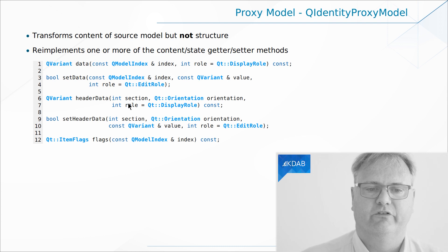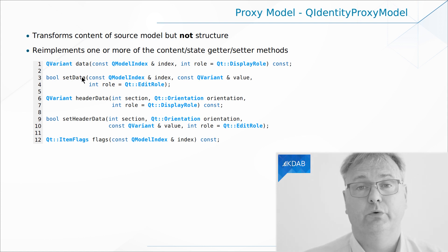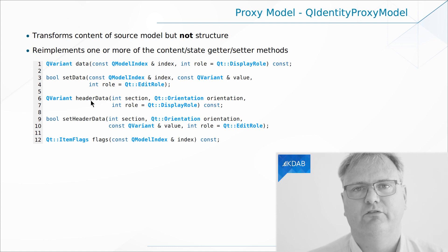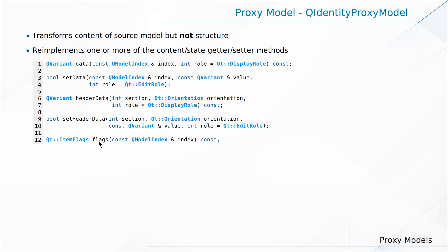The QIdentityProxyModel looks like this — these are the methods you usually would override. You would change data with the data method, and possibly change how setData is done. If you set the data, you modify it somehow and set it on the model underneath. HeaderData we don't use on QListView, but you could have other views that use header data. And then there is the flags method — it can tell you, per item, whether an item is editable, selectable, and so on. Some of these things don't make all that much sense if you use a ListView in QML; they are more specific to a QListView in a widget setup.